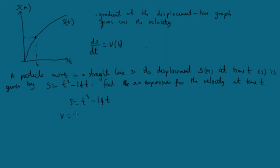The power of 3 comes down, so it's going to be 3t squared minus 14, because this is like t to the power of 1, so 1 times 14 is 14. And this is 1 minus 1 is 0, so that really is the t.